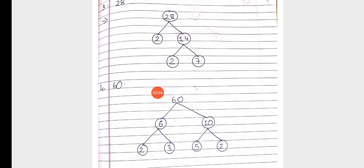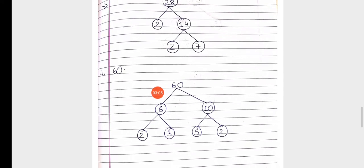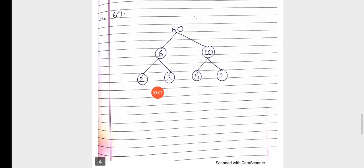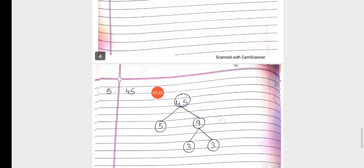In question number 4, we have to make a factor tree of 60. So 6 — 10s are 60. Now we can expand both 6 and 10. So 2 — 3s are 6, and 5 — 2s are 10. You can also solve it with another method — you can solve it in any other way.